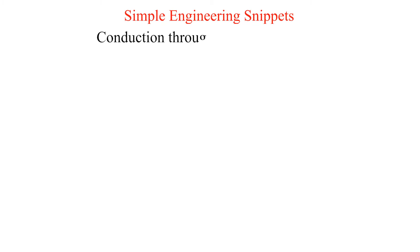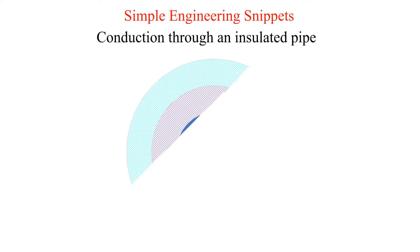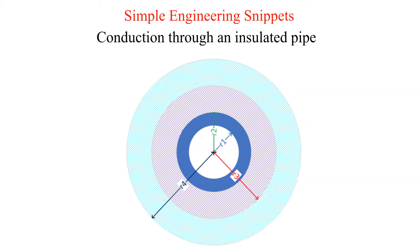Welcome to another simple instructional snippet. In this snippet we calculate the radial heat transfer rate from a steel pipe with two layers of insulation.